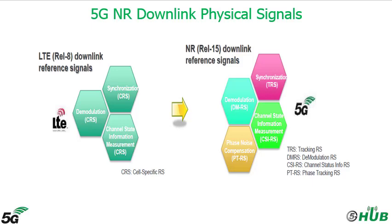5G New Radio Reference Signals are different from LTE, as LTE has a one-size-fits-all downlink reference signal called the Cell-Specific Reference Signal. What is new in 5G New Radio? First, there are no Cell-Specific Reference Signals, CRS, in 5G. A new Phase Tracking Reference Signal has been introduced in 5G. In contrast to LTE, the reference signals in New Radio are transmitted only when necessary. Also, the Demodulation Reference Signal has been introduced for both Uplink and Downlink channels.